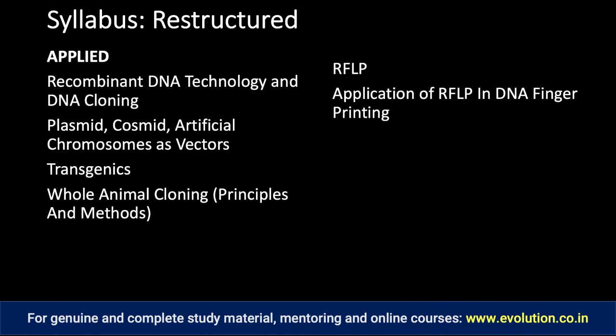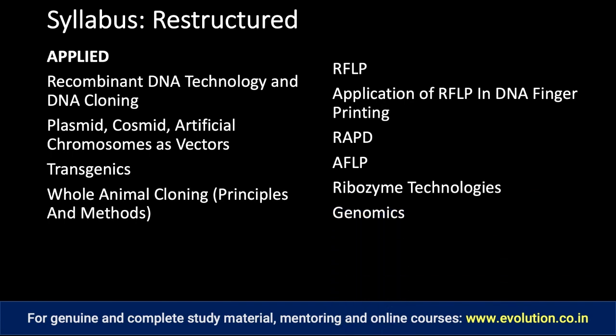After RFLP and DNA fingerprinting, you should do RAPD, then AFLP. Once done with these, you are ready to do ribozyme technologies — catalytic RNAs which can be applied in many contexts. Then lastly you will come to genomics and the human genome project, and the final topic is proteomics. Proteomics will complete your entire genetics coverage.